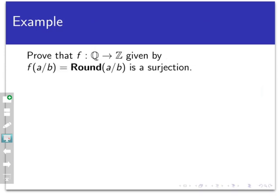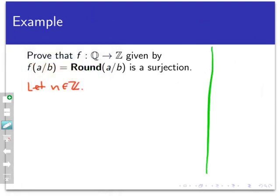Here's another example from the concept check: a function from the rationals to the integers defined by f(a/b) = round(a/b), which takes a rational number and rounds it up. Is this a surjection? We claim it is. We start by letting n be an arbitrary integer. As playtime: pick the integer 3 — can we find a rational that maps to 3? Since the function rounds to the next higher integer, 3/1 works: it equals 3, which rounds to 3. That pattern seems to always work.